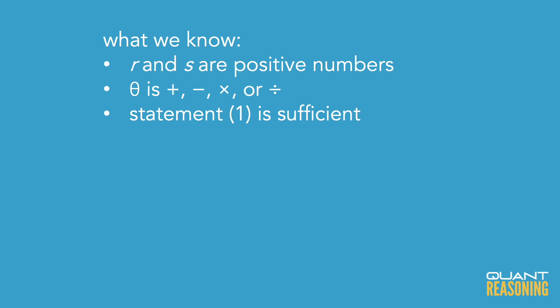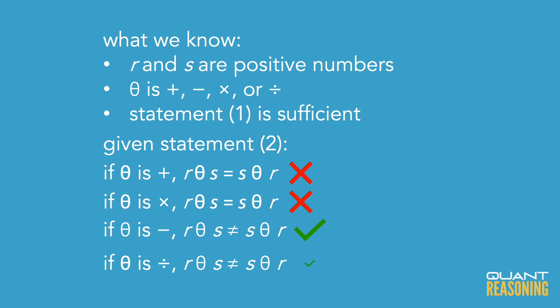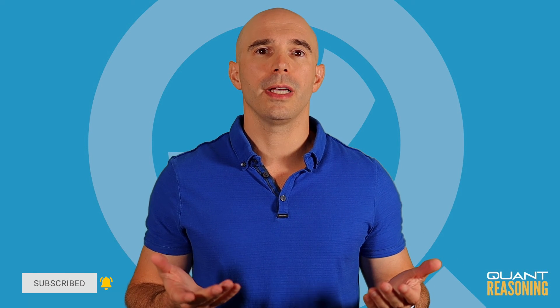Statement two is a bit more interesting. It's saying that if r and s are different positive numbers, then the order of applying that operation matters — r operation s is not going to be the same as s operation r. We know that in addition and multiplication, the order doesn't matter. But in subtraction and division, the order does matter, under the condition that r and s are different numbers, which this statement does state. Since statement two tells us the order does matter, this operation can't be addition or multiplication, but it still might be either subtraction or division, and there's no way to tell which. So statement two is not sufficient on its own.